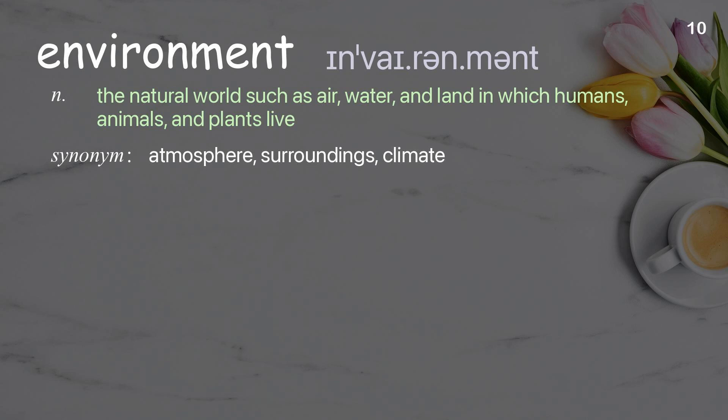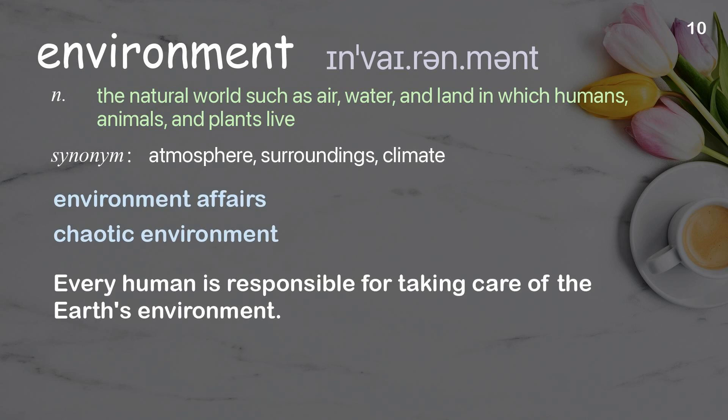Environment: the natural world such as air, water, and land in which humans, animals, and plants live. Examples: chaotic environment. Every human is responsible for taking care of the Earth's environment.